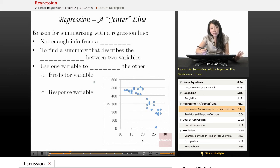All right, so let's talk about this regression as a center line instead of a center point. So here are some reasons for summarizing with a regression line. And notice that for all of these, I'm talking about scatter plots. So regression lines are really used for scatter plots.